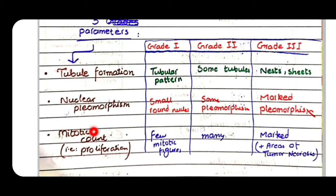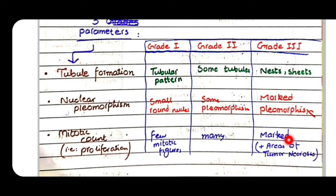The third parameter is mitotic count, which is an indicator of proliferation. In grade 1 there will be few mitotic figures, as low grade tumors are not proliferating at a very high pace. In grade 2 the mitotic count will be many, and in grade 3 there will be a marked number of mitotic figures along with areas of tumor necrosis — because when cells proliferate at a very rapid rate, they also die very fast.